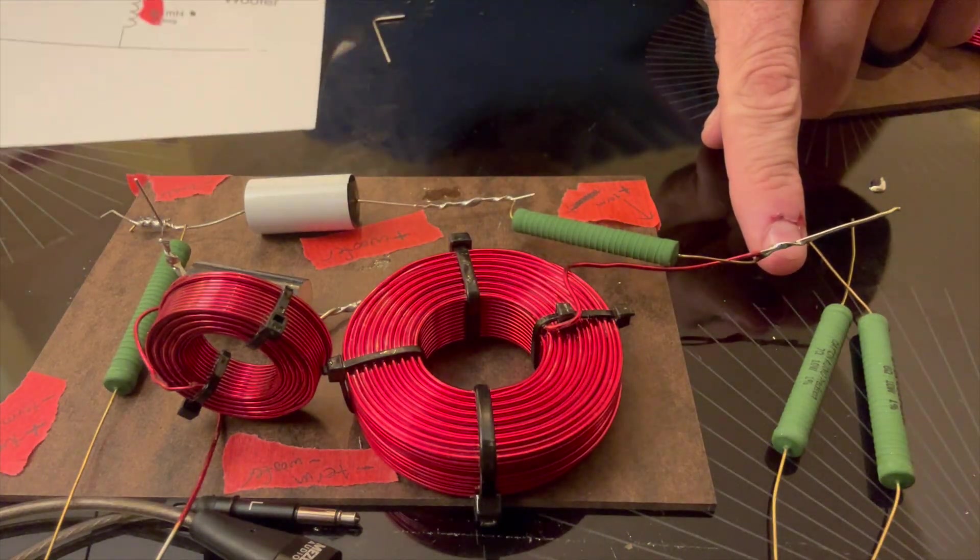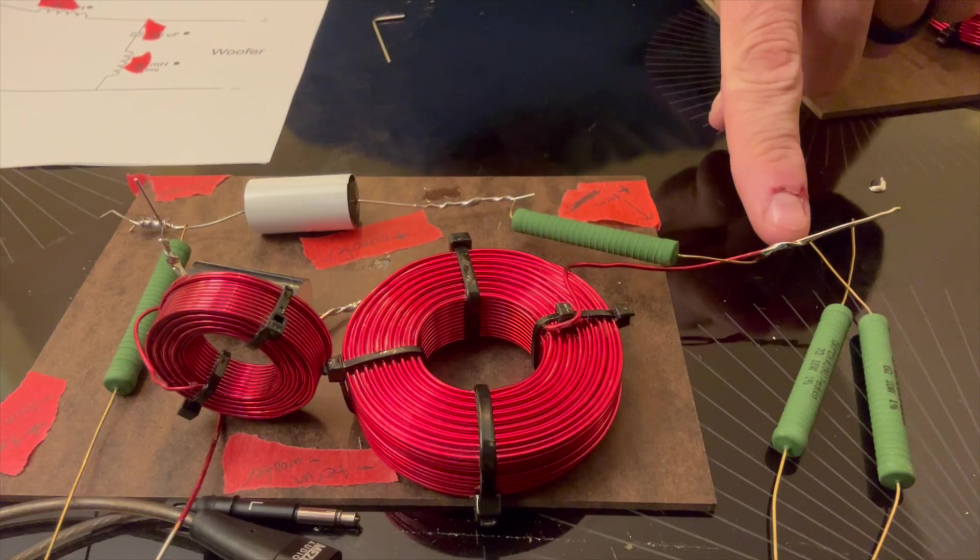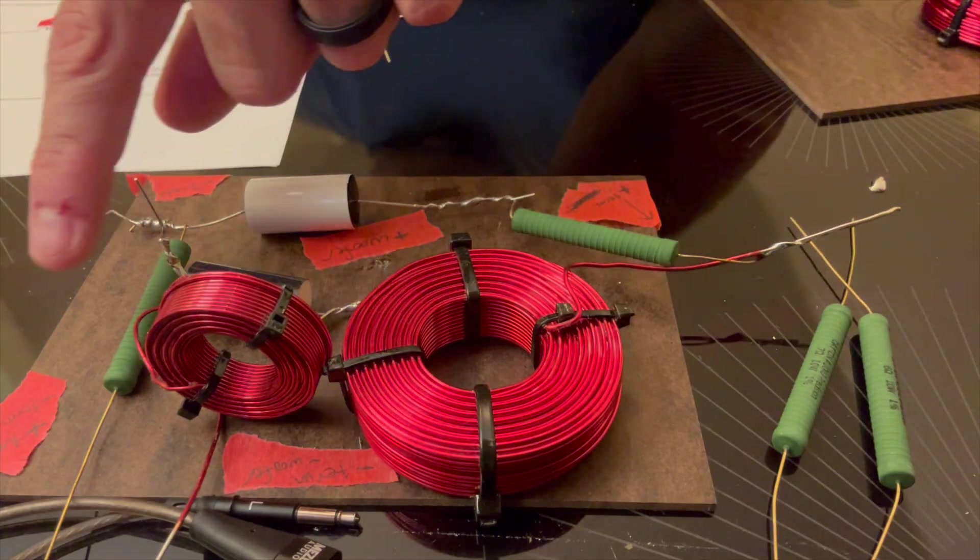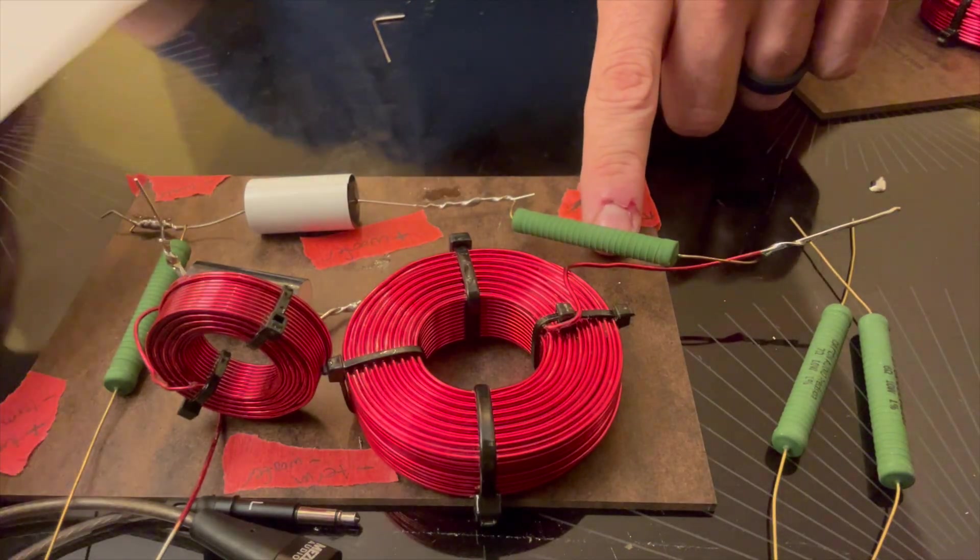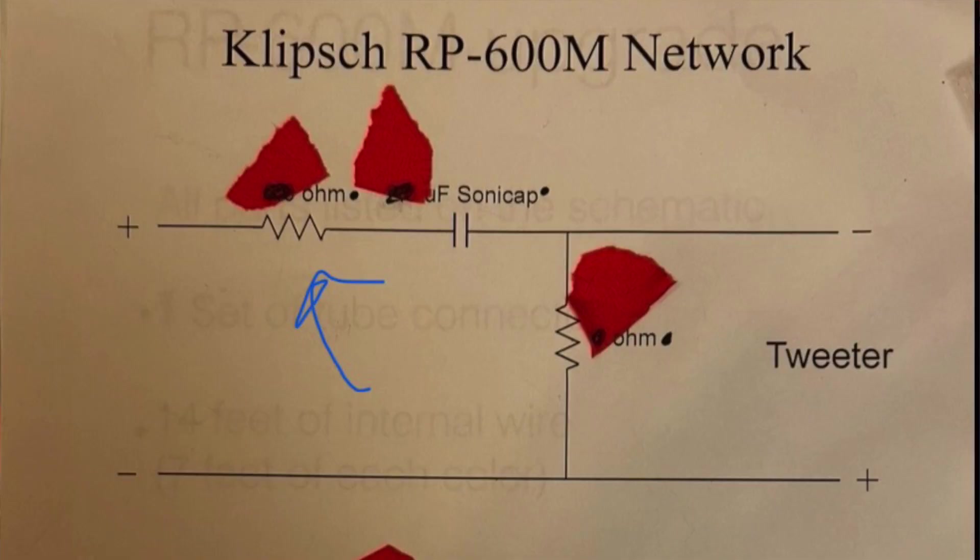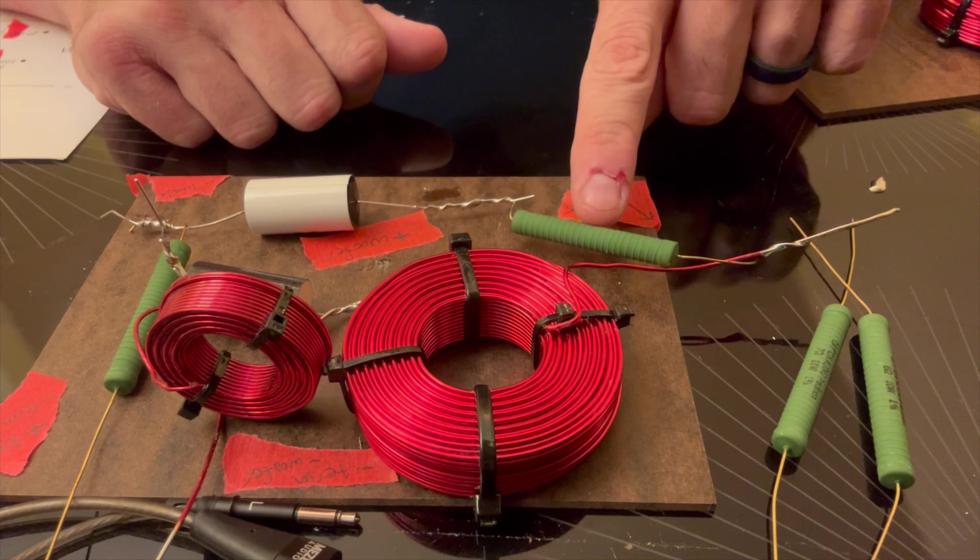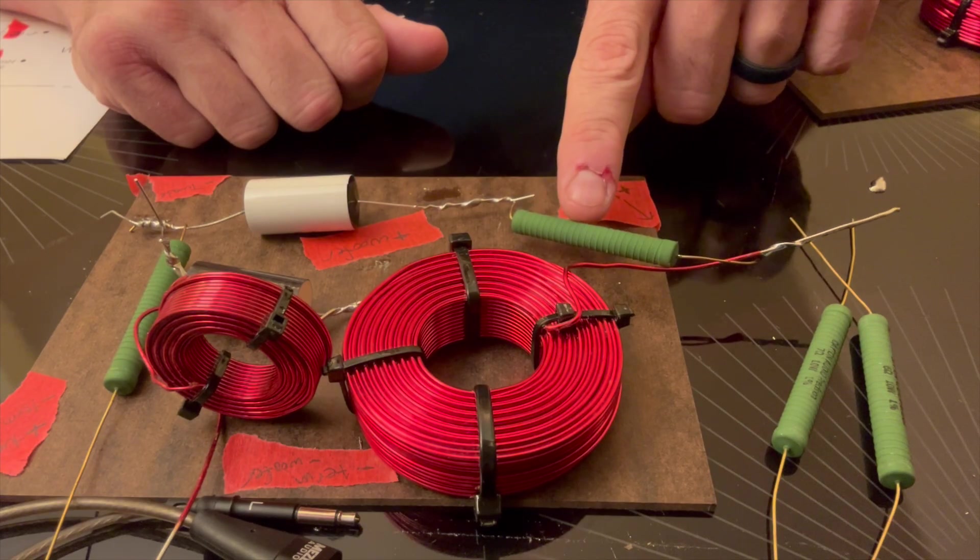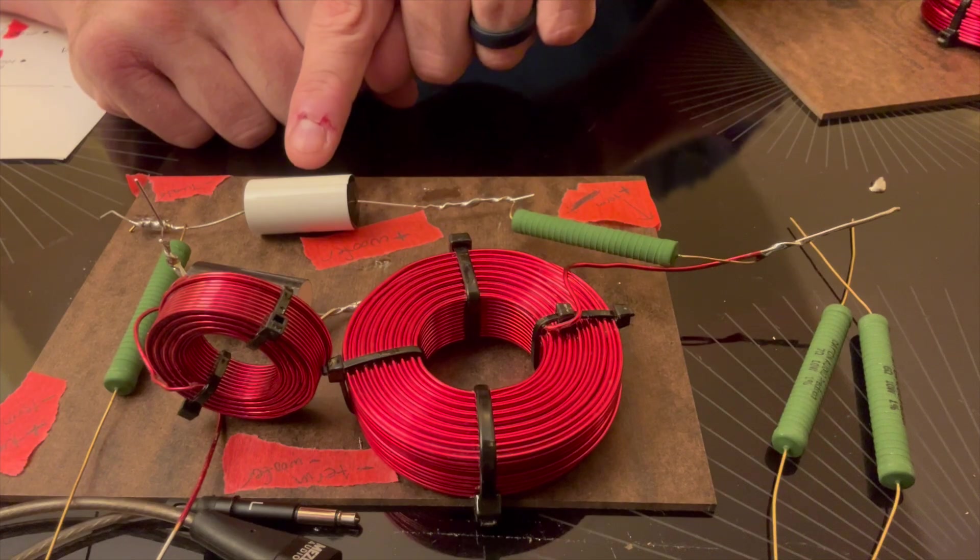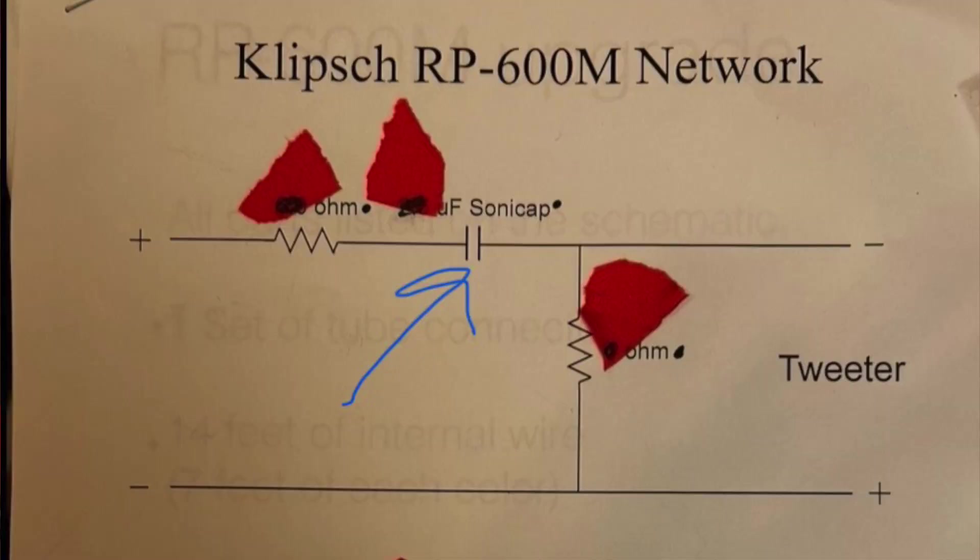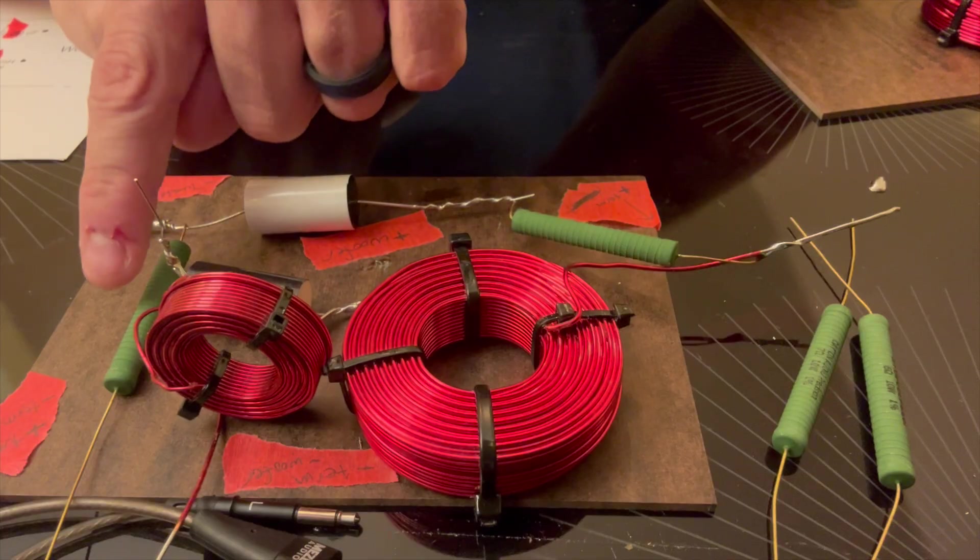If you follow the diagram, you'll see the tweeter network first. That is that resistor. I'll put a picture up, it's easier. This will be that first resistor in the tweeter and I'll put an arrow to it. Then it follows here—I already soldered it to the sonic cap.